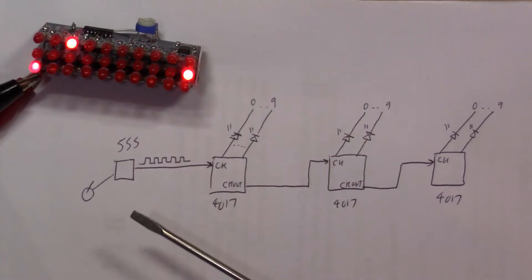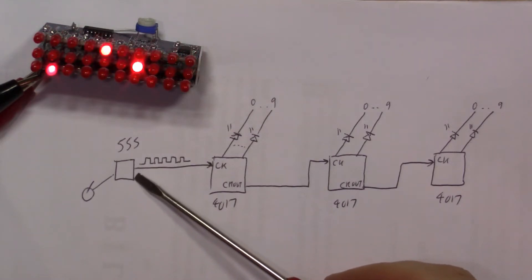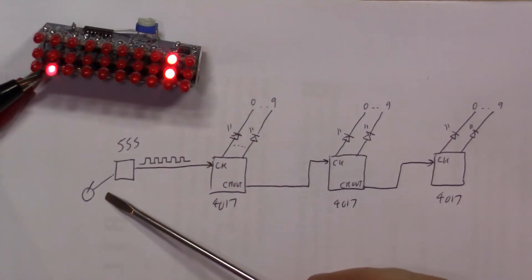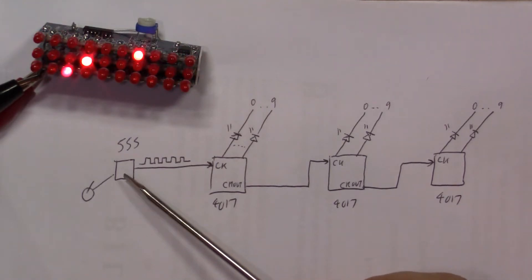This is now what the circuit diagram looks like. So on the left here we have the 555 which is generating the clock pulses and we can control that with the variable resistor, the preset that I showed you on the top.